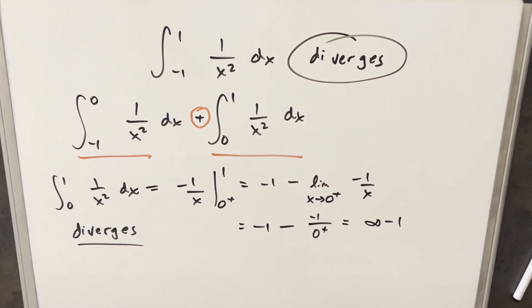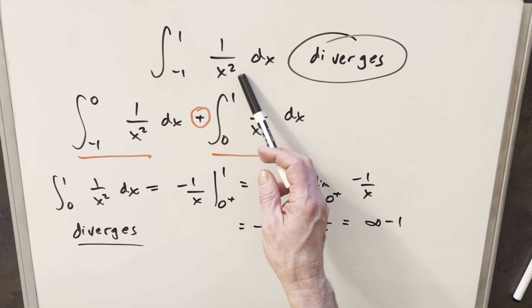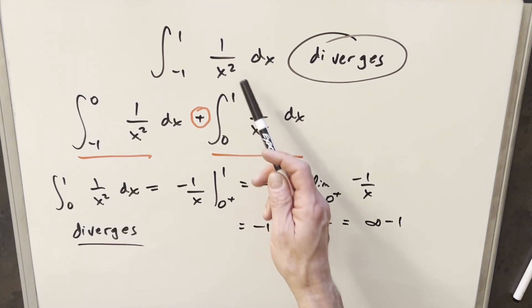So no solution. So one other interesting thing to think about for this problem is what would happen if we had a different exponent on the x? What if this was 1 over x cubed, let's say? Or what if this was just 1 over x? So in that case, would we have the same exact problem?